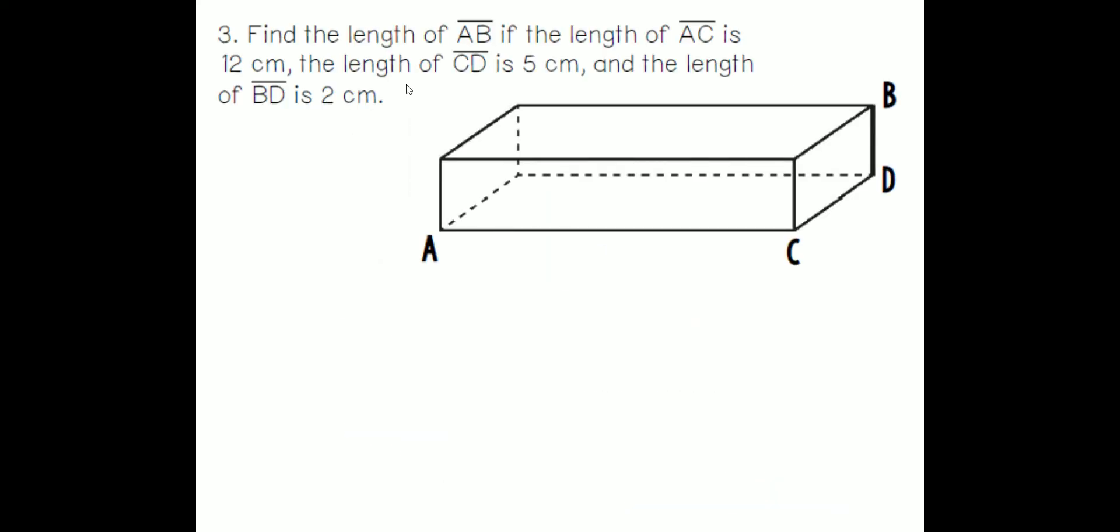Let's do this example. Find the length of AB. We need to find the length of A and B. A is in the front, B is in the back, so I'm going to draw that line. What are the clues they give us? The length of AC is 12 centimeters, so A to C, this bottom length, is 12. The length of CD is 5, so from here to here is 5, so we're going to fill that out. And the length of BD is 2.